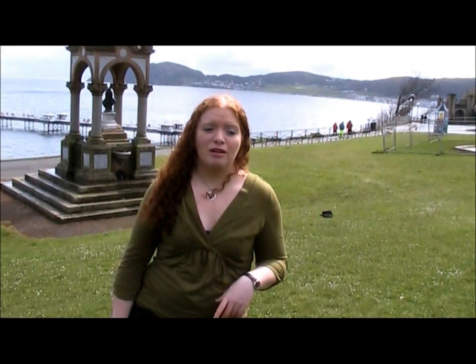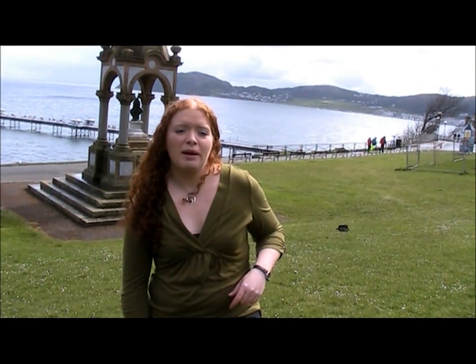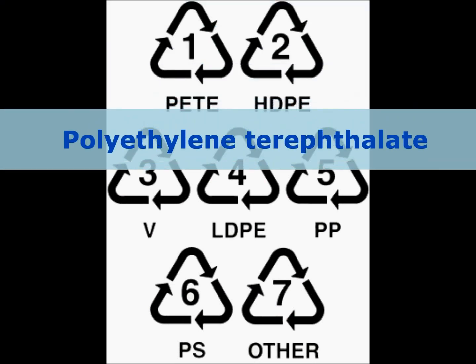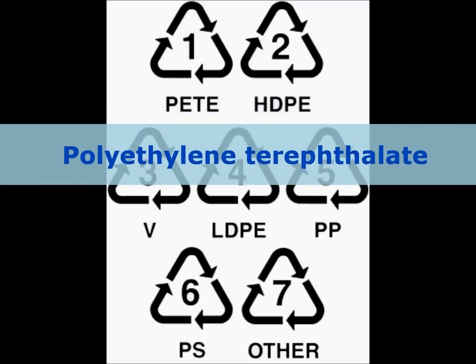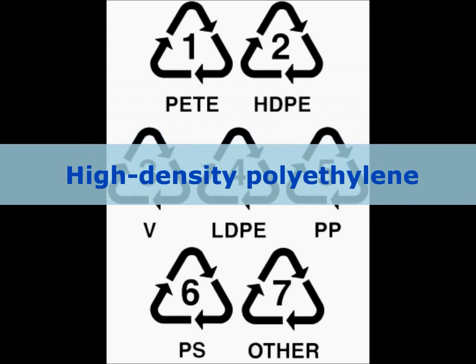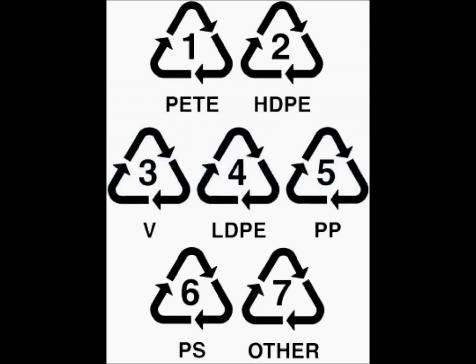Plastics can be separated into 7 different categories based on how easily they can be recycled and whether or not they give off any toxic by-products. Categories 1 and 2 — polyethylene terephthalate and high-density polyethylene — are the easiest to recycle. These are commonly used in food and drinks packaging and plastic containers.